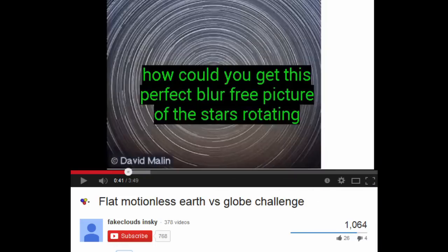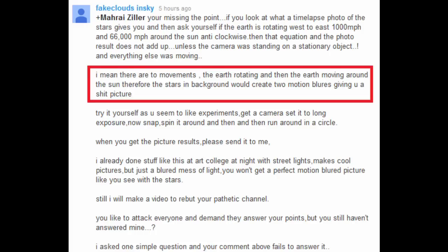Fate Clouds in Sky contends that his conjecture is that, if the Earth is orbiting the Sun, then any time-lapse photograph of the stars should contain motion blur, not only from the Earth's rotation, but also from the motion of the Earth as it orbits the Sun, which should make for a very messy photograph. To quote them, I mean, there are two movements, the Earth rotating and then the Earth moving around the Sun. Therefore, the stars in the background would create two motion blurs giving you a shit picture.